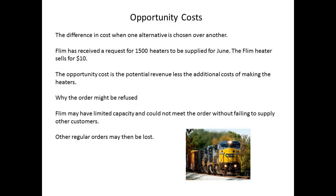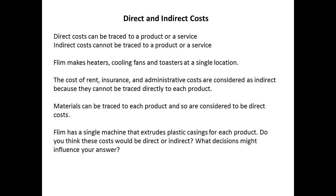In trying to meet extra orders, Flim Products may not be able to meet the requirements of other customers, and regular customers could be lost. Direct costs are those that can be traced to a particular product or service provided. Indirect costs cannot be traced to individual products. Items such as rent and insurance are usually indirect costs, whilst materials that are used to make a product are direct costs.